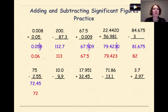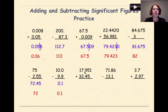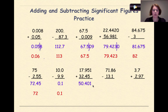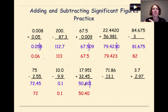10.0 minus 9.9. When we subtract those two, we get 0.1. We already have our answer in the ones position, so we don't have to do anything here. Next: 17.951 plus 32.45. When we add these two numbers, we get 50.401. Our least precise number goes out two decimal places, so we round and get 50.40. We keep the zero — it's significant as a placeholder.